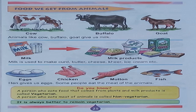Now children, take out your textbook, page number 25, open it. I have opened it here — see the picture. Food we eat from animals.